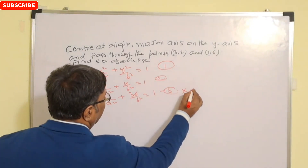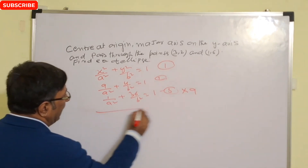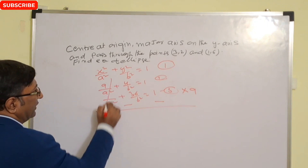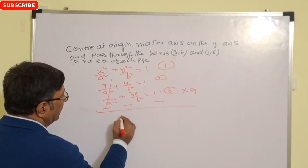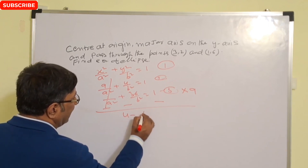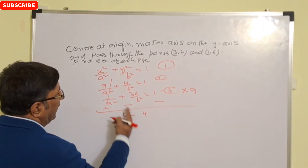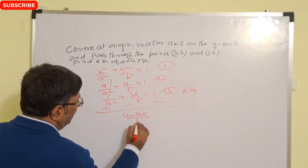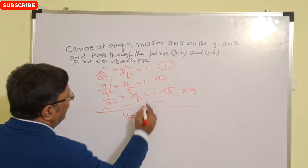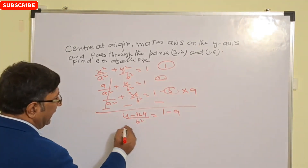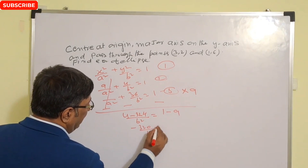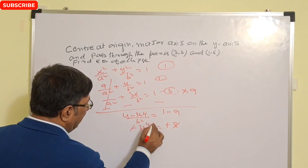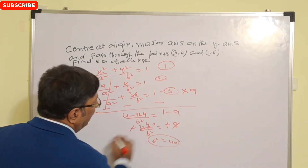To solve, multiply the third equation by 9, giving 9/a² + 324/b² = 9. Subtracting the second equation from this, the 9/a² terms cancel out. We get 324/b² − 4/b² = 9 − 1, which simplifies to 320/b² = 8, so b² = 40.